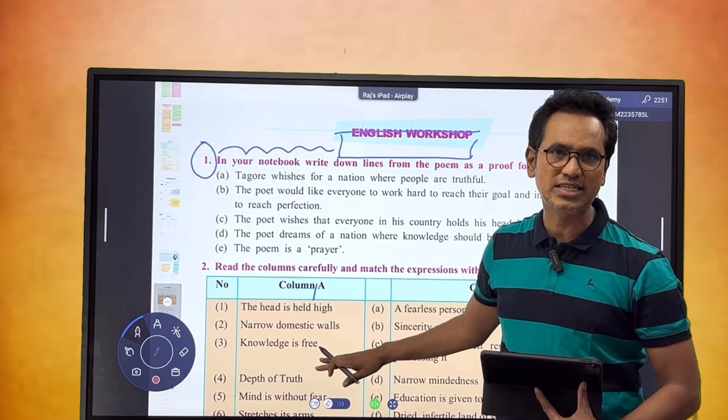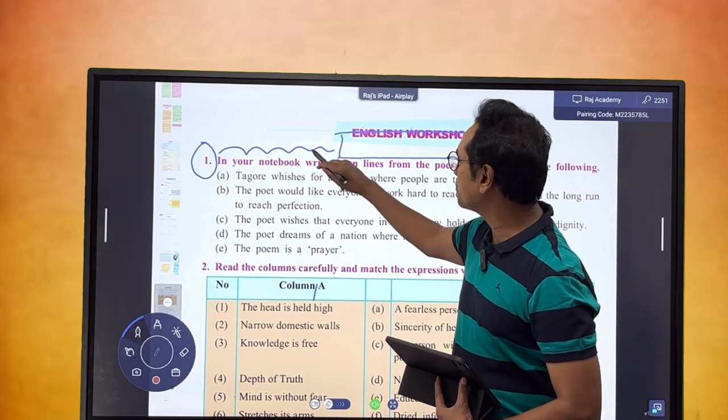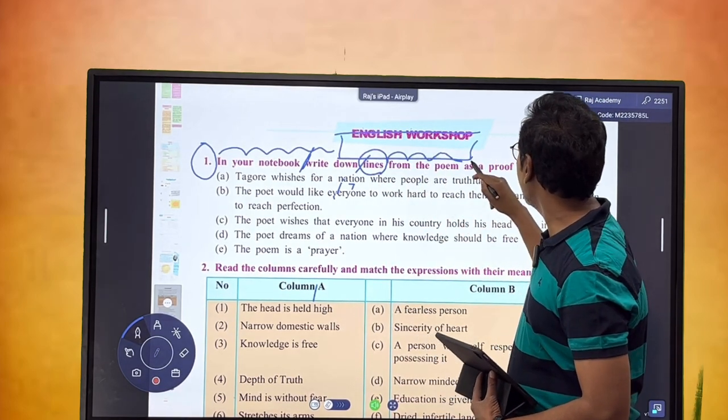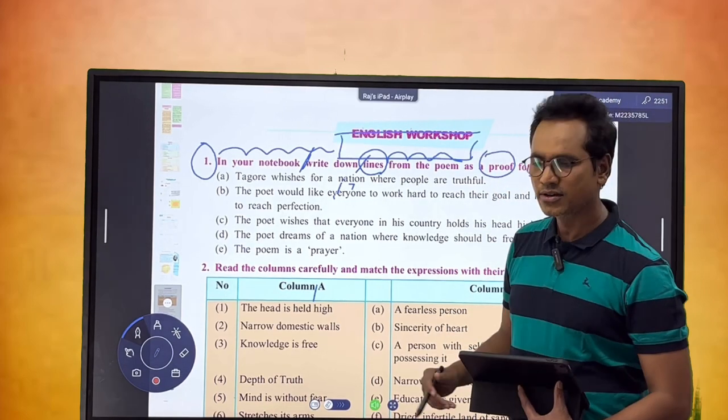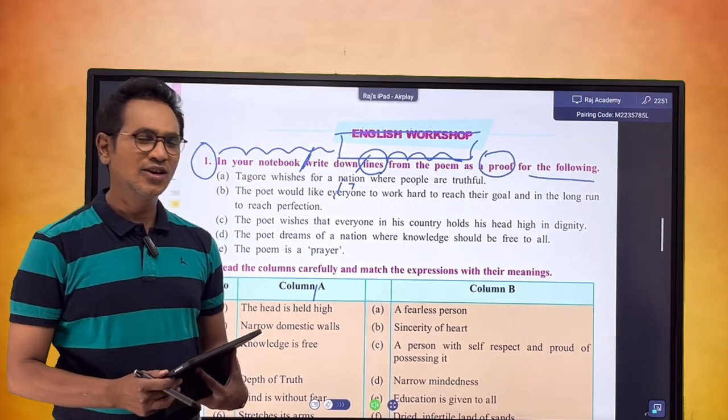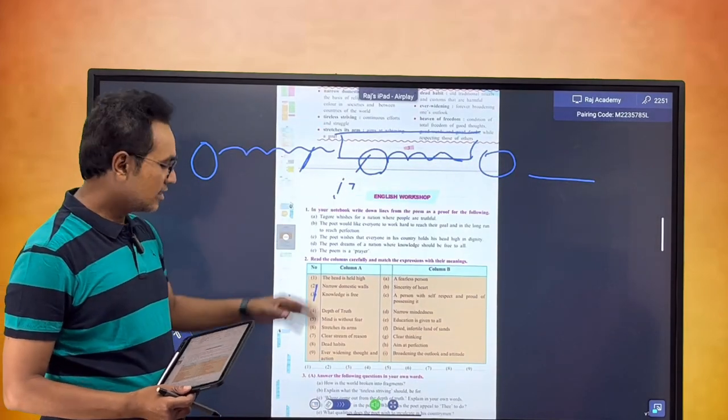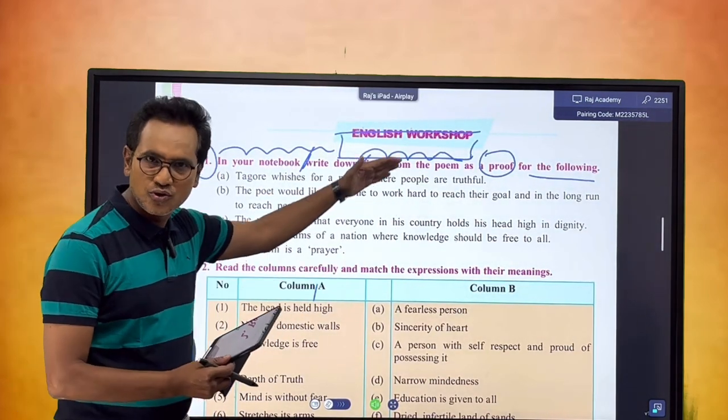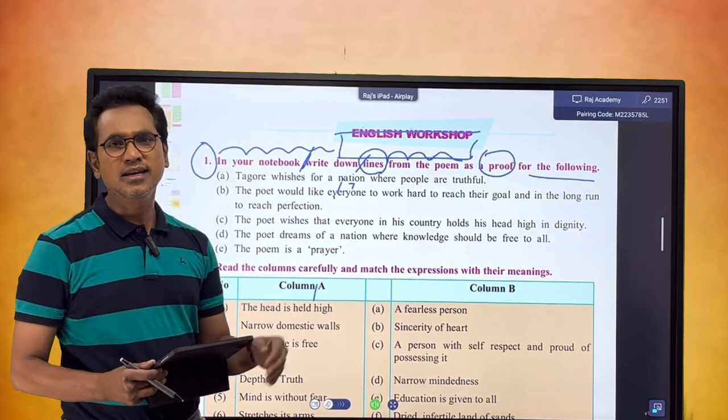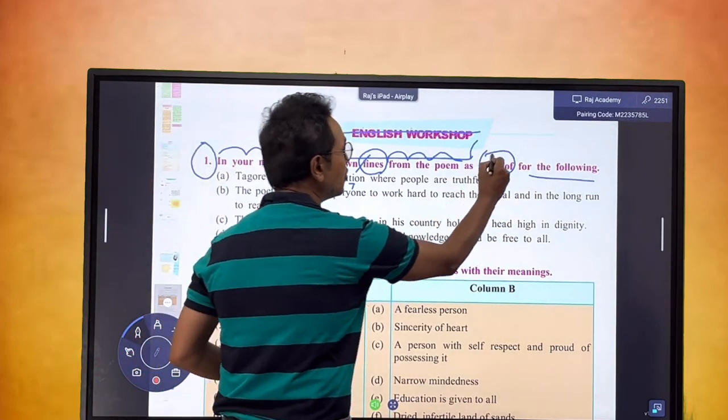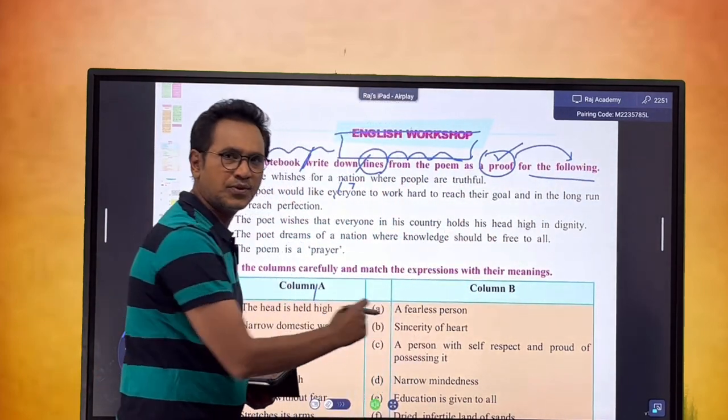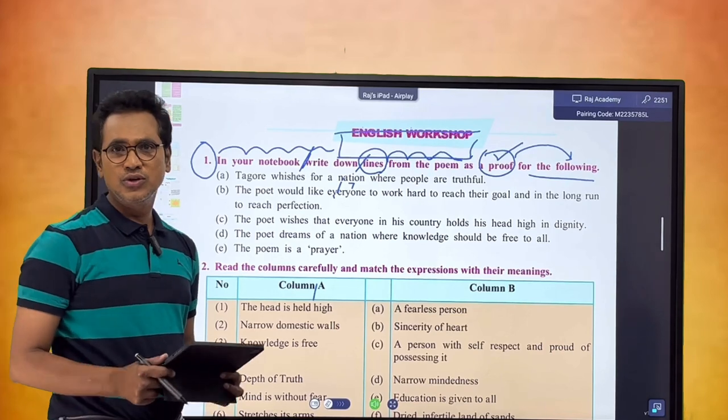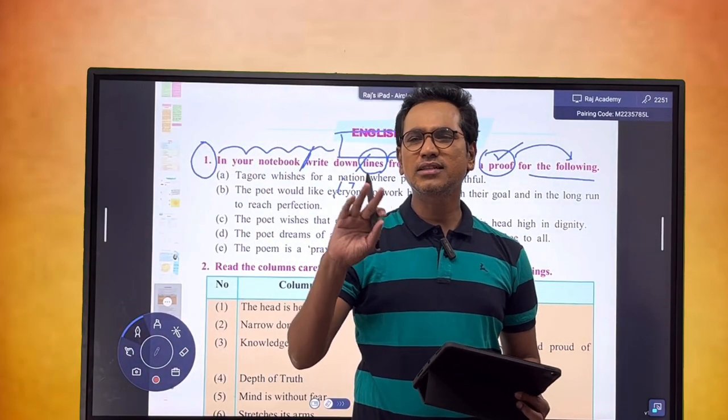Our instruction is: in your notebook, write down lines from the poem as a proof for the following. There are so many things to be done. Lines to be written from the poem we have studied, and these lines are written as proof for the following things. First is Tagore wishes for a nation where people are truthful.